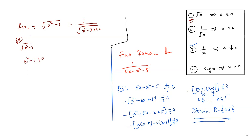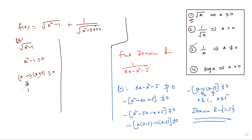Solve x squared minus 1 using the identity a squared minus b squared equals (a minus b)(a plus b). So this becomes (x minus 1)(x plus 1) greater than or equal to 0. The critical values are: x minus 1 equals 0 gives x equals 1; x plus 1 equals 0 gives x equals minus 1. For greater than or equal to 0, you should take x does not belong to the closed interval (minus 1, 1).